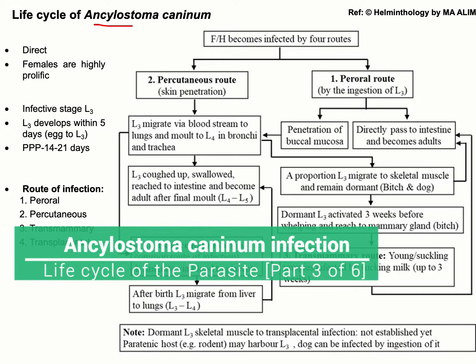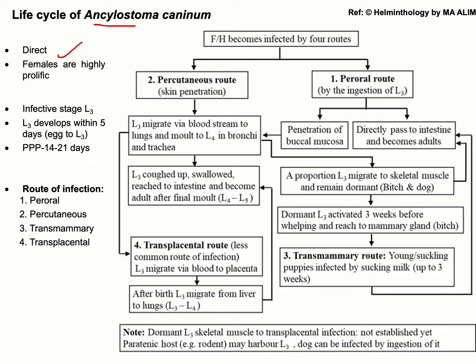The life cycle of Ancylostoma caninum is a direct life cycle, as there is no involvement of an intermediate host. The infective stage is L3, and there are four routes of infection: the first is the oral route, the second is percutaneous, the third is transmammary, and the fourth is the transplacental route of infection.